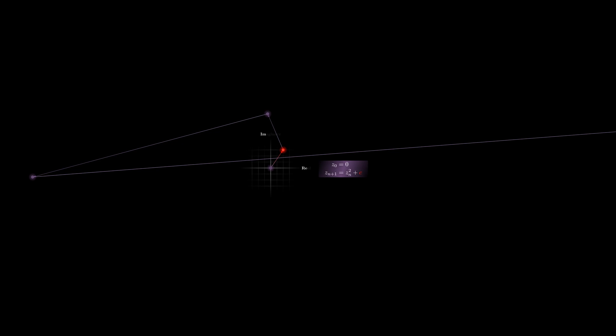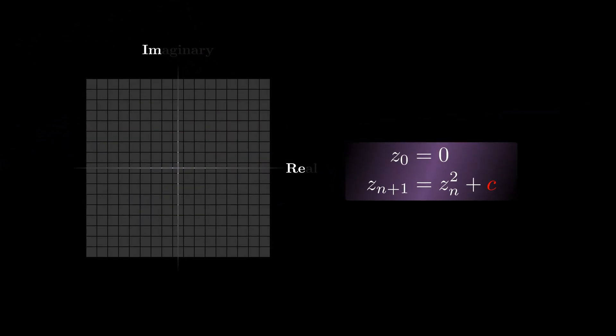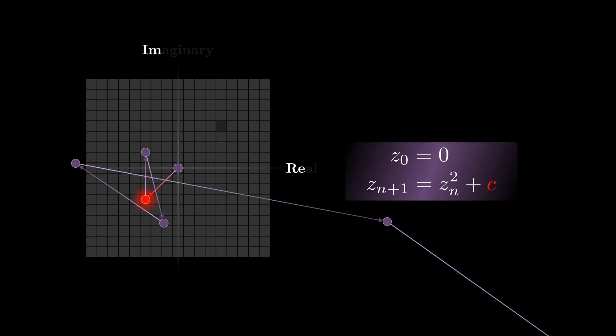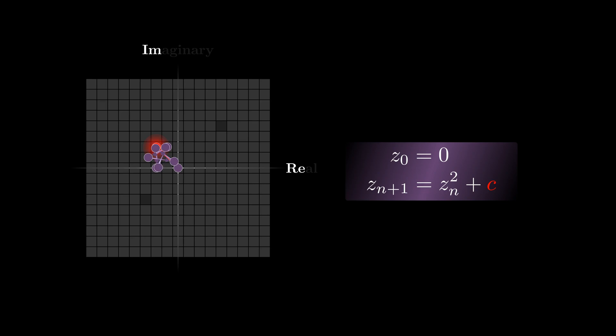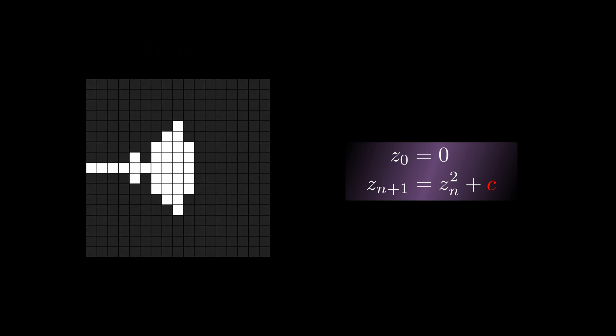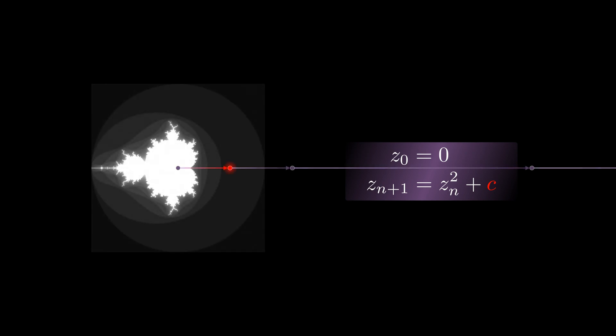To visualize the Mandelbrot set, we need a grid representing an image. We then select step by step a point — that is, a pixel from this grid — as the point C in the sequence, and check if the sequence stays within a certain area. If the numbers in the sequence keep growing, then C is not considered part of the Mandelbrot set and will be colored dark. Otherwise it will be colored white. One can also adjust the transparency of each pixel depending on how quickly the sequence diverges to infinity.